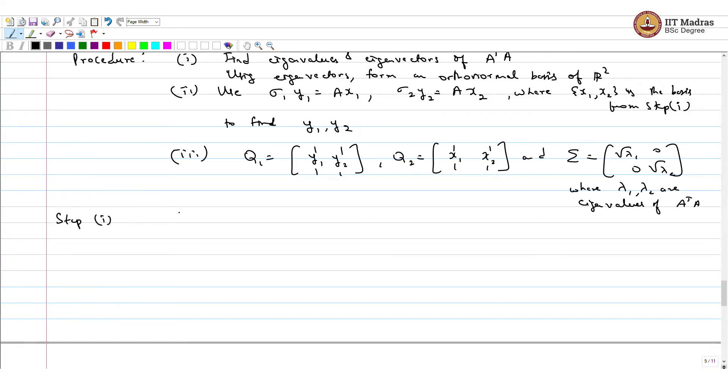We know A transpose A is 2 square root 2, square root 2, 3. Needless to say, it is a real symmetric matrix. It is easy to find eigenvalues. They are lambda 1 equals 4, lambda 2 equals 1. So the singular values sigma 1 equals square root lambda 1 equals 2, sigma 2 equals square root lambda 2 equals 1. We are already ready to define or work out the matrix here.